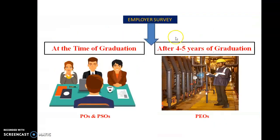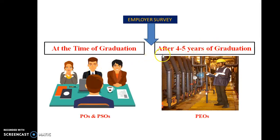An important clarification: many people confuse 'faculty survey' with 'employer survey.' There are actually two types of employer survey. The first type is taken at the time of graduation — industry people come to campus to recruit graduates, and we ask them to assess our graduates on PO1 to PO12 plus PS1 and PS2. Once students join industry, after four to five years we conduct another employer survey, but those questions are related to PEOs.